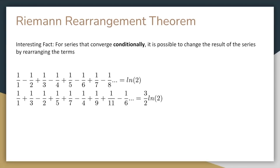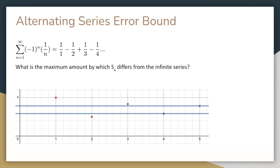You don't need to remember the Riemann rearrangement theorem or know how to evaluate these series, but it's a pretty interesting result. The maximum amount by which a partial sum of an alternating series differs from the value of the infinite series is the absolute value of the first term that's not included in the partial sum, because that's the distance between the upper and lower bounds. So in the alternating series 1 minus 1 half plus 1 third minus 1 fourth and so on, the maximum error of S4 is the absolute value of A5, which is 1 fifth.